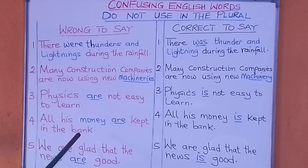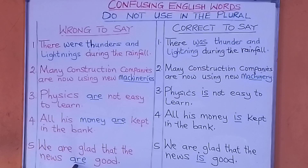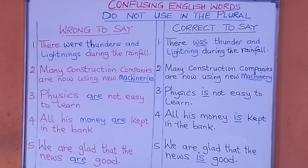Look at the word 'money'. Money is a singular noun and always takes a singular verb or pronoun. Look also at the word 'news'. News, though in plural form, always takes a singular verb. If only one thing is meant, we can say 'a piece of news' or 'an item of news'. You can say 'ten pieces of news', 'ten items of news', or 'ten news items'. Let's look at some examples on the board.